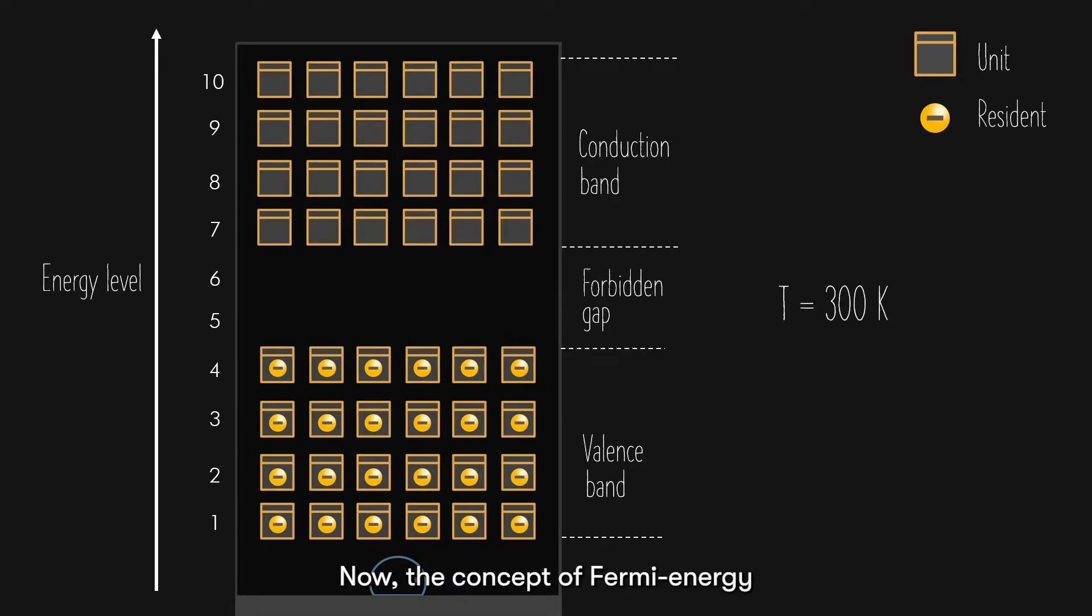Now, the concept of Fermi energy level is all about probability. You can ask yourselves, what is the probability of an electron existing at the first unit from the left of the 7th floor? The answer would be zero.